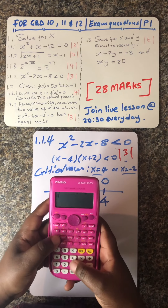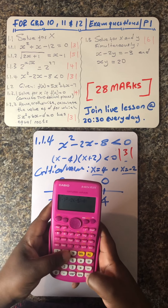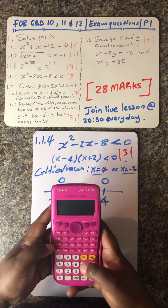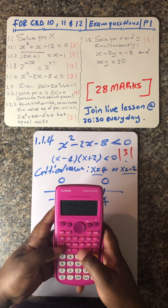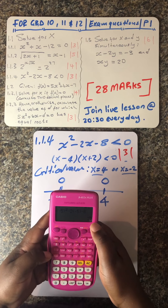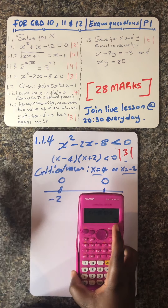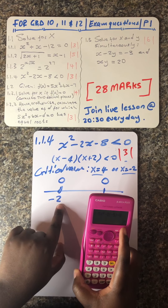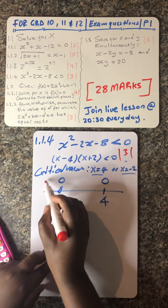So it will be open bracket, negative 5, close bracket, squared, minus 2 into negative 5, close bracket, minus 8. Let's punch — it's equals to. I'll just redo it: negative 5, close bracket, squared, minus 2 into negative 5, close, then minus 8. You get a positive number. We're not really interested in that exact number — we just want to see the sign. A positive number is greater than 0, so it's not what we are looking for.